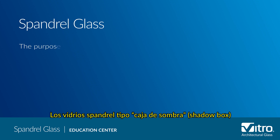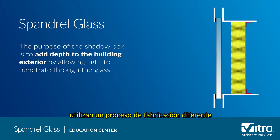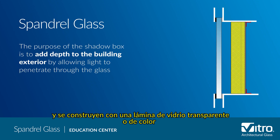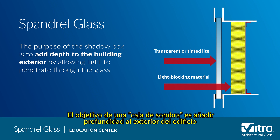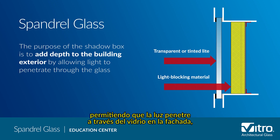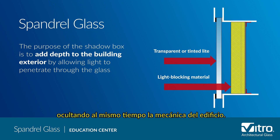Shadow box spandrels use a different fabrication process and are constructed with a transparent or tinted lite backed by an insulated metal sheet or some other form of light-blocking material. The purpose of a shadow box is to add depth to the building exterior by allowing light to penetrate through the glass into the facade while still hiding the building mechanicals.